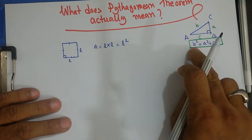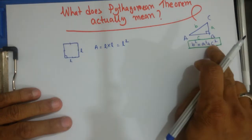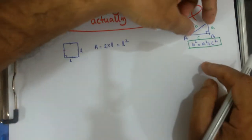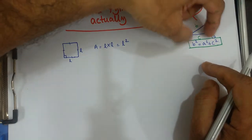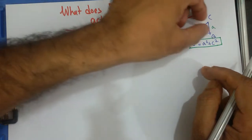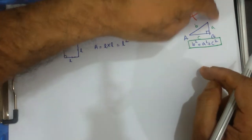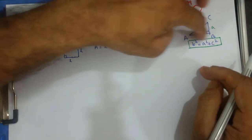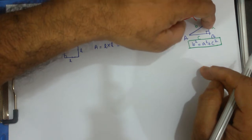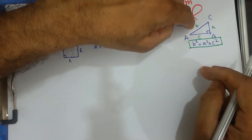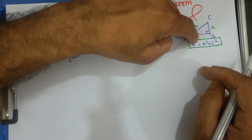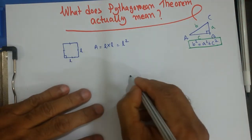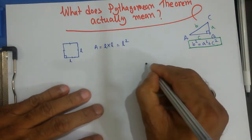Whenever we have B squared equal to A squared plus C squared, it might mean that there is a square here, a square here, and a square here — all three squares formed by this triangle — having lengths B, C, and A respectively. Let me draw this.